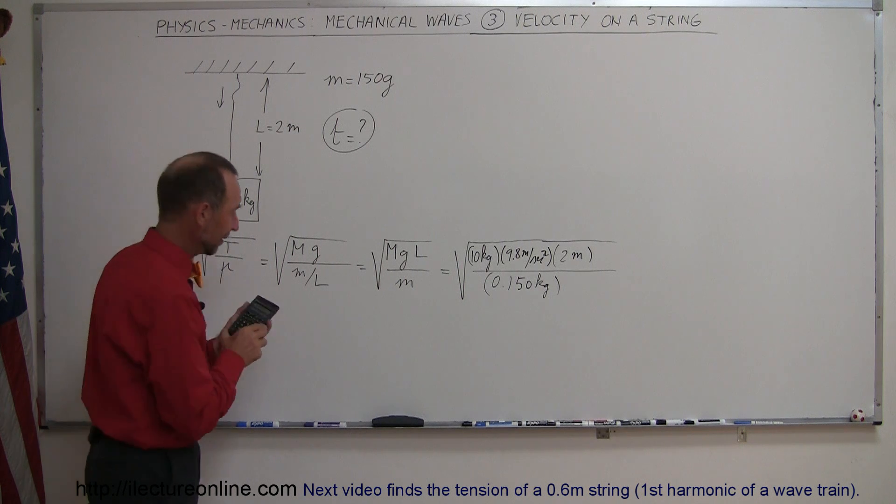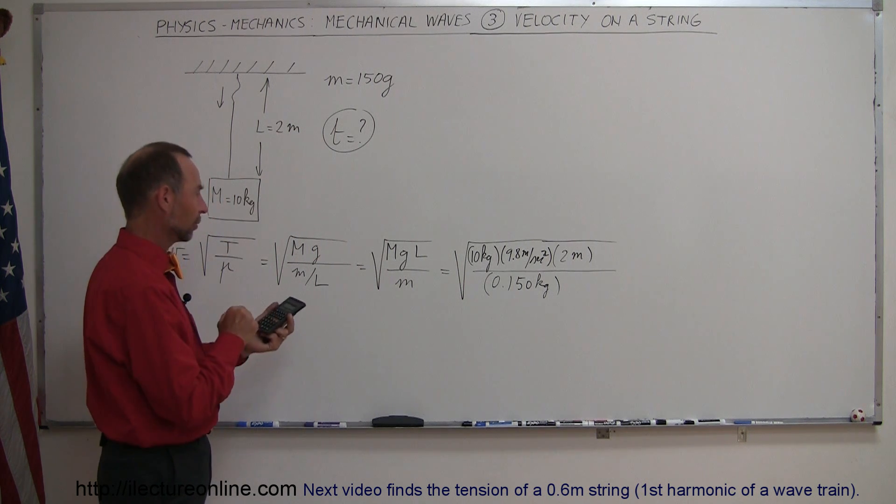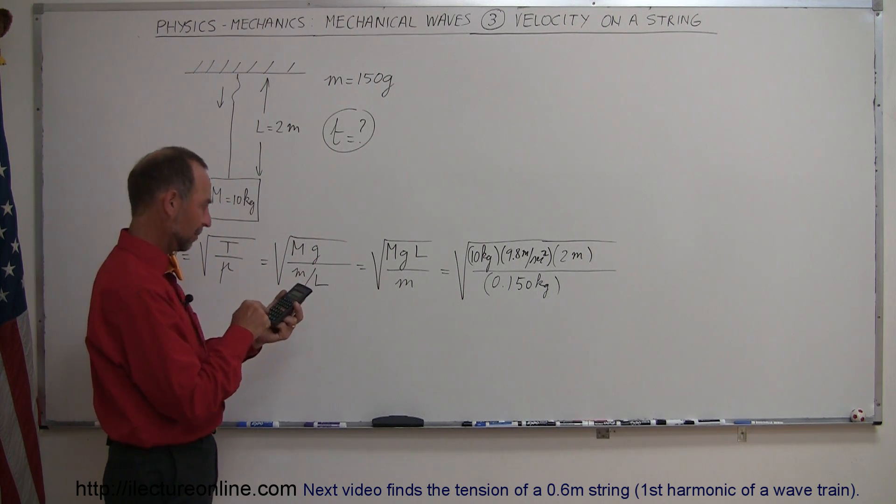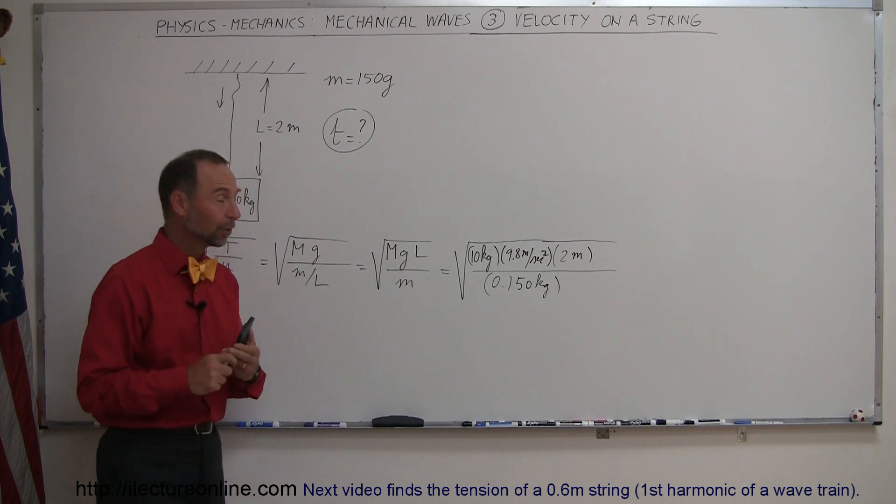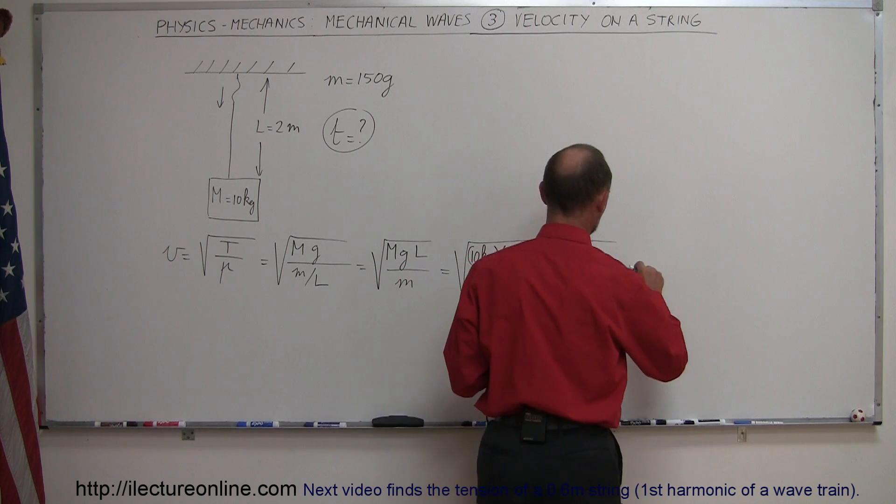Okay, now with the calculator, let's find out what that is equal to. So we have 10 times 9.8 times 2 divided by 0.15 equals, taking the square root, and it looks like that wave will move with a speed of about 36 meters per second.